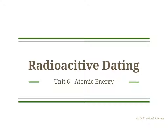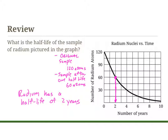In today's lecture we talked about radioactive dating and how it pertains to how old things are. The graph on the right-hand side shows the relationship between number of radium atoms and the number of years it takes them to go through decay. The original sample has 120 atoms in it, and after one half-life it would have roughly 60 atoms. If I took 60 and dropped down, I could determine the number of years in one half-life.